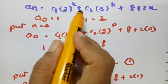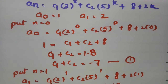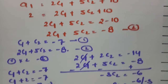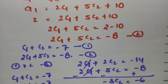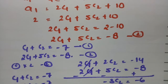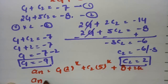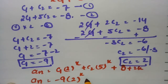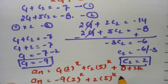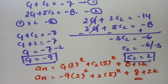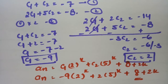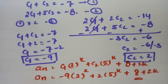Substituting C1 = -9 and C2 = 2, the general solution is An = -9·2^k + 2·5^k + 8 + 2k. This is the complete solution for the given non-homogeneous recurrence relation. Thank you for watching — please practice and share with your friends.